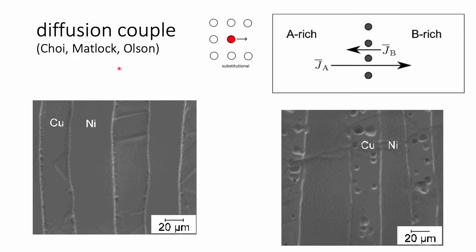Images provided by colleagues at the Colorado School of Mines show copper and nickel layers before a diffusion experiment, and after the experiment, porosity created inside the copper layers. There is a net transport of copper in one direction, and because the diffusion coefficient of nickel in copper is smaller, more vacancies accumulate on the copper side, condensing as pores. This is a real, measurable effect.